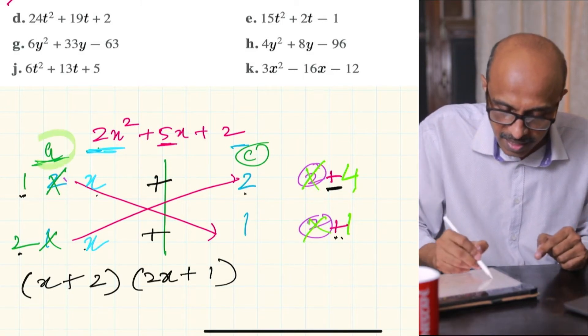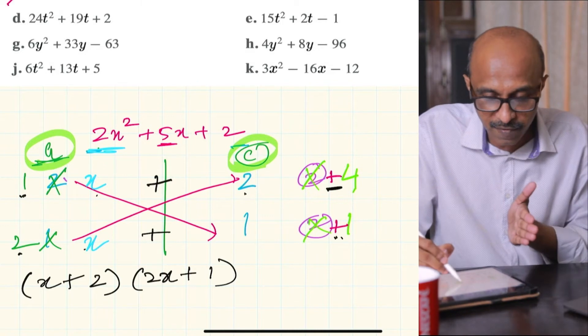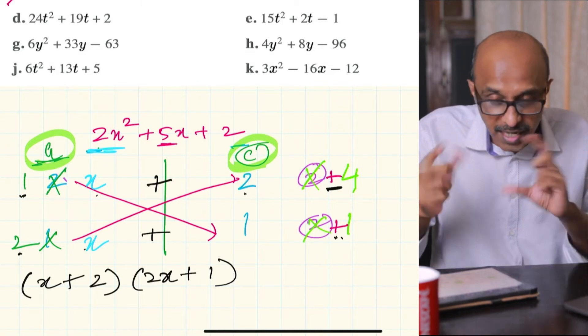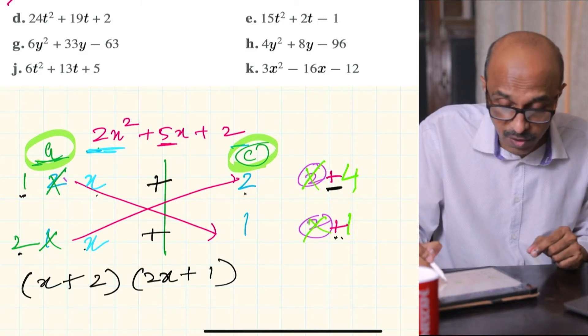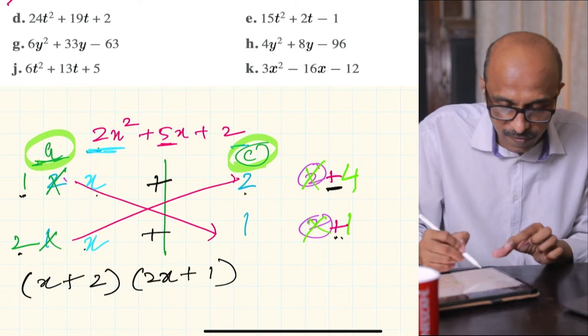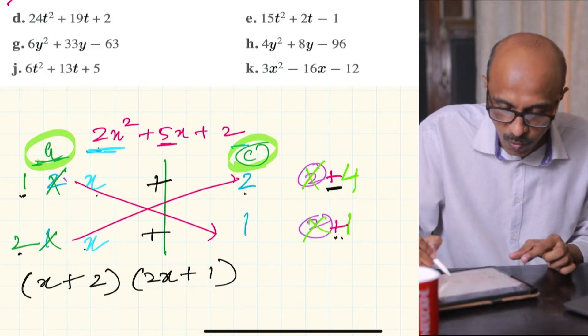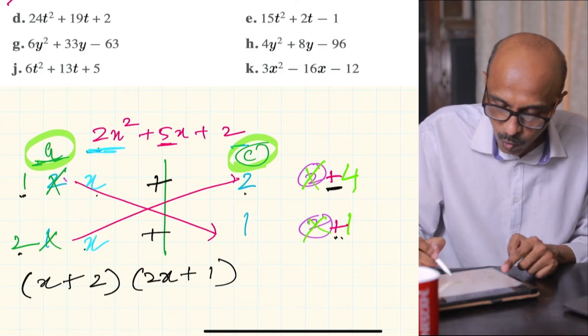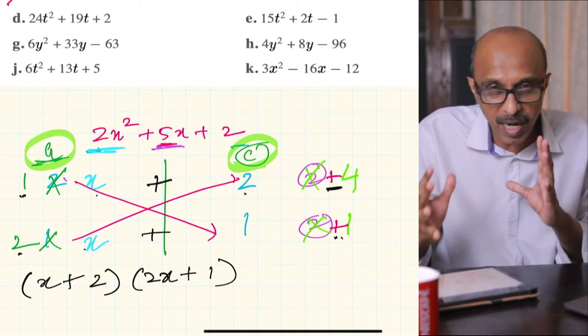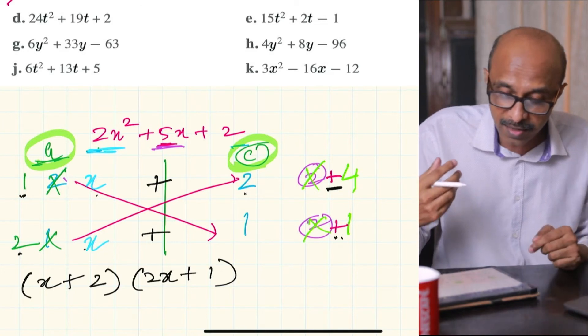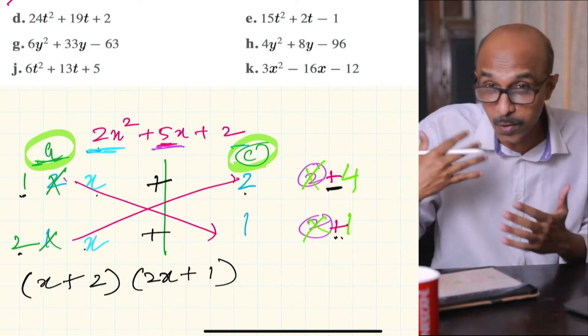I'll repeat it again. These are the factors of A column-wise and the factors of C column-wise, and then you've got to look for the right combination after you've cross-multiplied. When we switched the order of the factors of A as 1 and 2, and kept this as 2 and 1, we saw that 2 times 2 gives you 4 and 1 times 1 gives you 1, and 4 and 1 add up to 5. Initially it might seem difficult, but the more you practice and know your multiplication tables, it becomes easier.